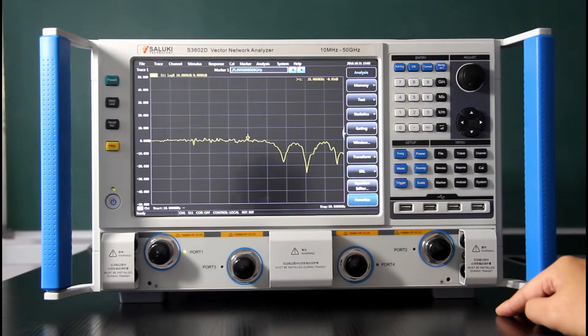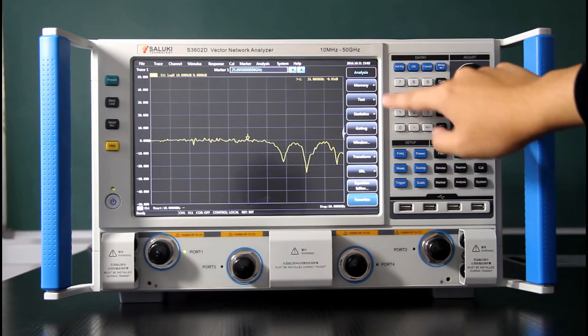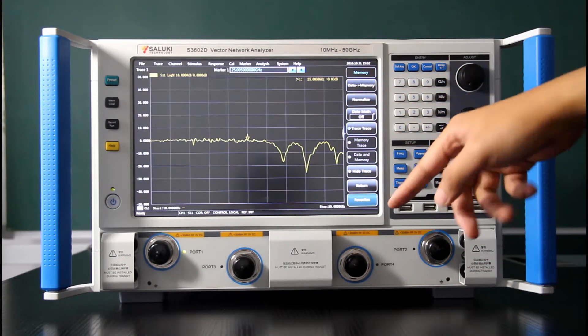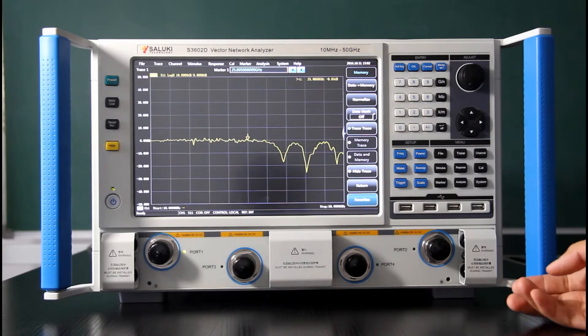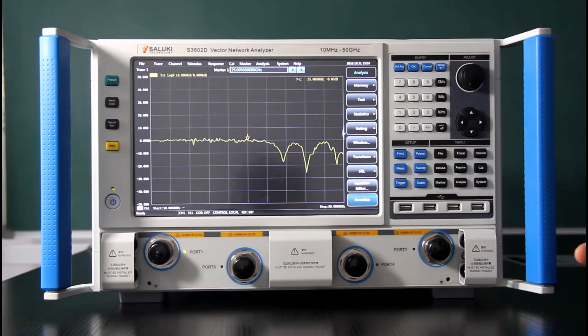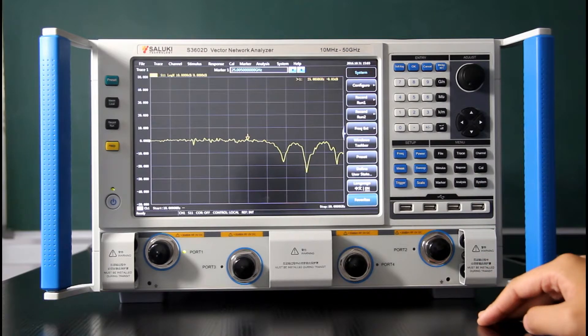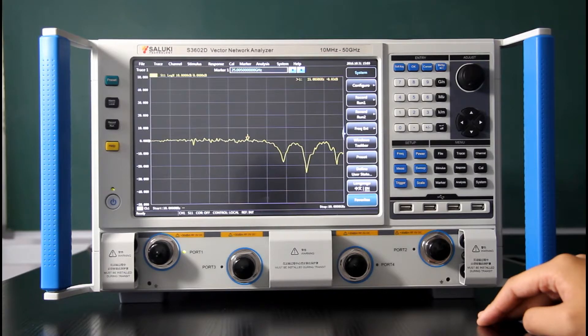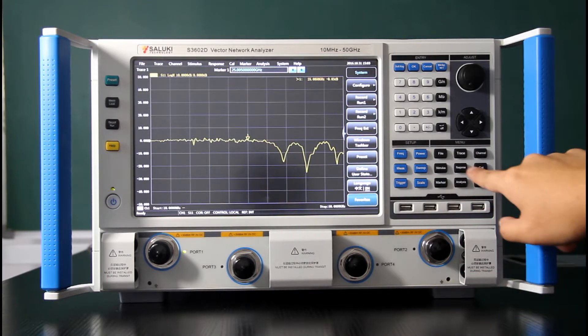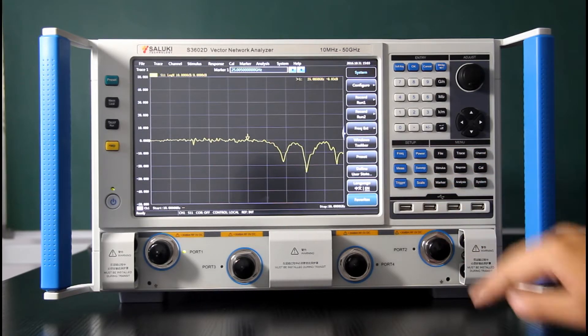Memory. This will do some operations about the results you get, such as save a trace to the memory. Do some math about the current trace and the memory trace. So system key is all about the configuration of the system, like language, like record. So that is all for the menu key zone.